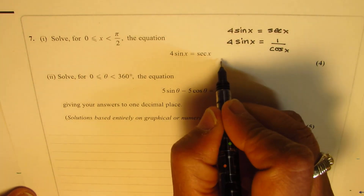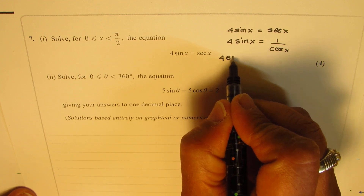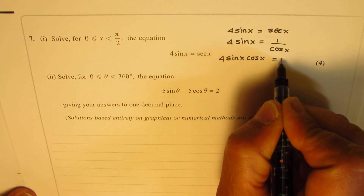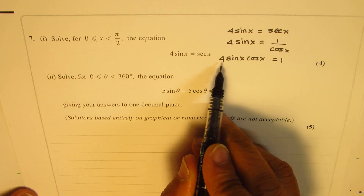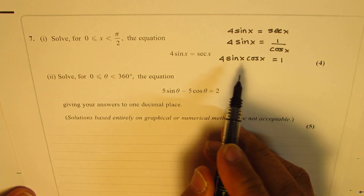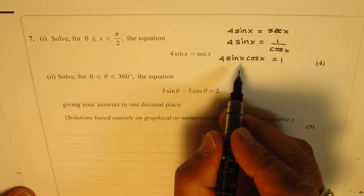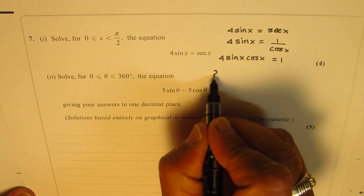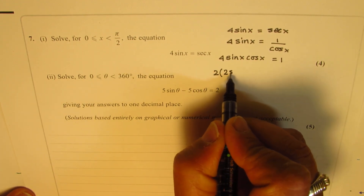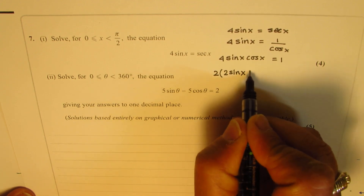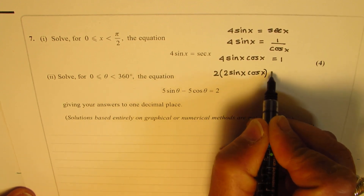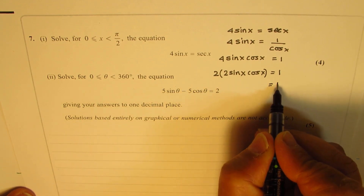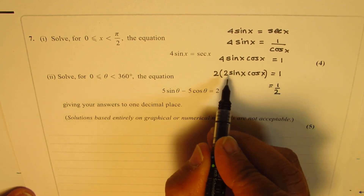We can cross-multiply, getting 4 sin x cos x equals 1. You should remember the double angle formula here: 2 sin x cos x equals sin 2x.